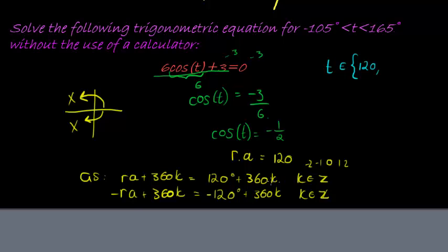If I add one full rotation, I get 480. 480 is way too big, so I'm not going to add more rotations, I'm going to subtract a few rotations. 120 minus 360 gives me negative 240. Negative 240 is too small, I'm not allowed to go there, so I'm not subtracting any rotations either.